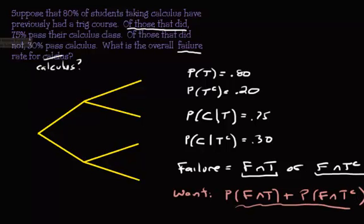Let's fill out the tree diagram now. So we have, this would be my trig and then not trig, and this was 0.8 and down here 0.2. Then we have, we'll call this the passing calc and not passing calc. We know that passing calc given you took trig was 0.75.